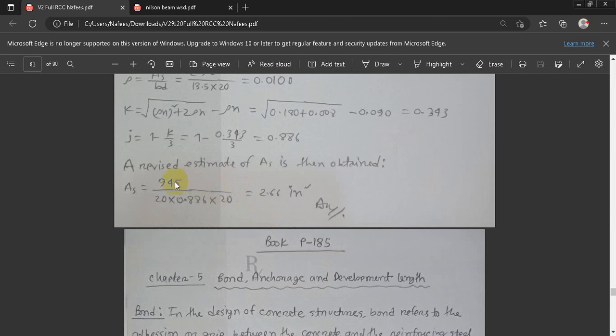We have to revise the value of AS. We have to make M equals AS times FS times j times D. Thus, AS equals M divided by FS times j times D, which is 2.66 inch square. This is our answer.